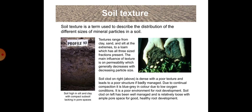Now we will discuss about soil texture. Soil texture is a term used to describe the distribution of different sizes of mineral particles in a soil. Texture ranges from clay, sand, and silt at the extremes to a loam which has all three sized fractions present. The main influence of texture is on permeability, which generally decreases with decreasing particle size. The soil shown on the right is dense with poor texture and leads to poor structure if badly managed; due to continual compaction, it is blue-grey in color due to low oxygen conditions and is a poor environment for root development. The soil on the left has been well managed and is relatively loose with ample pore space for good, healthy root development. Soil high in silt and clay with compact subsoil lacks pore spaces, as shown in the figure.